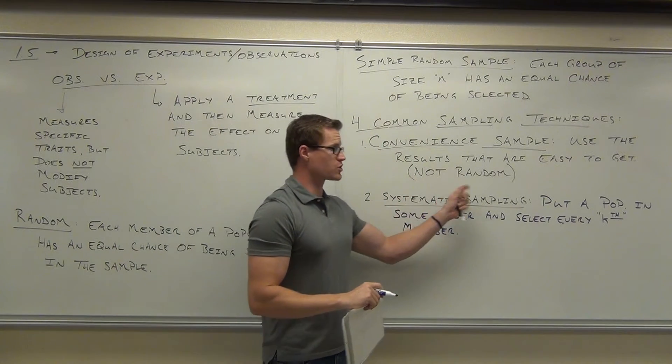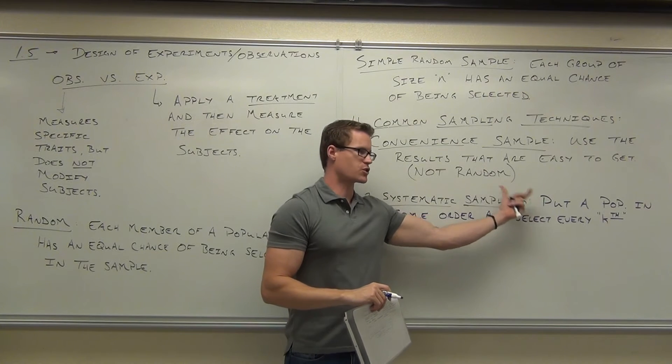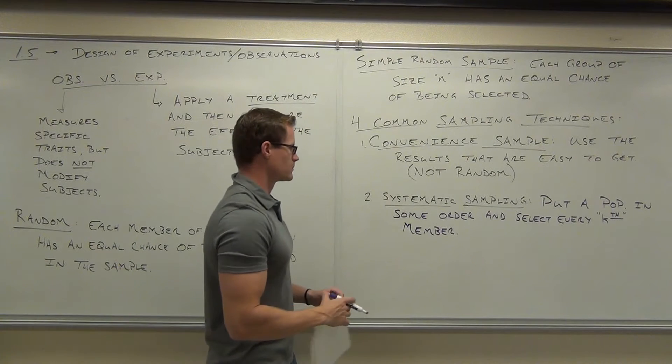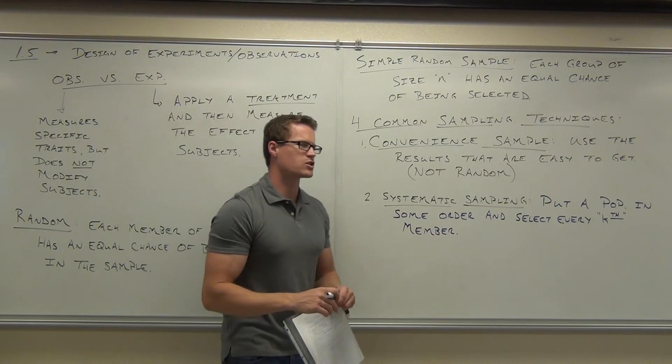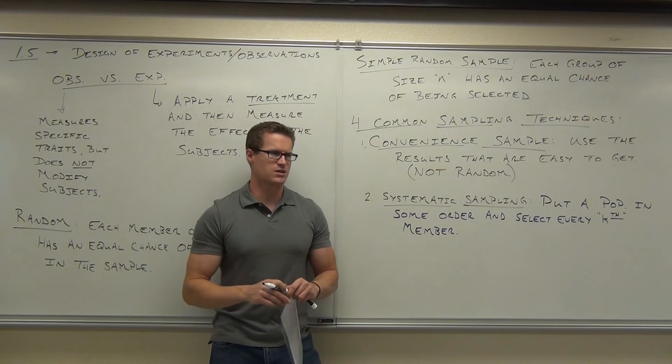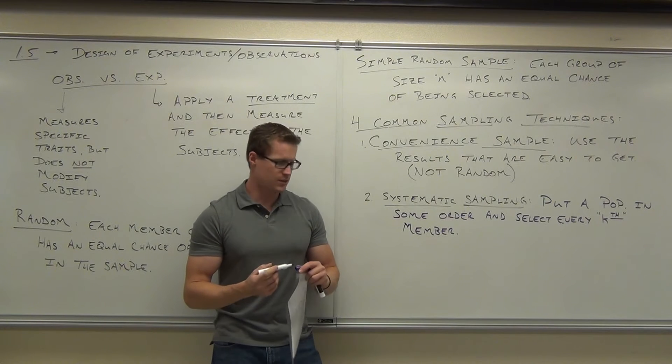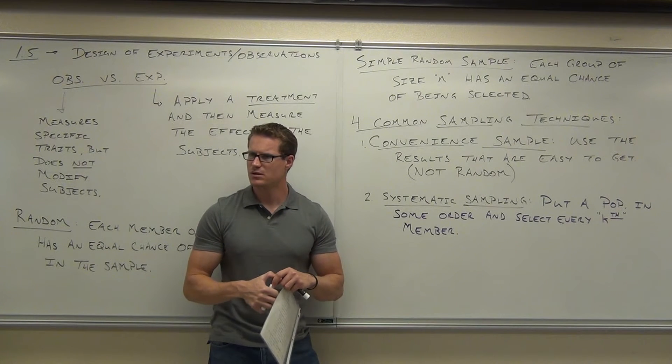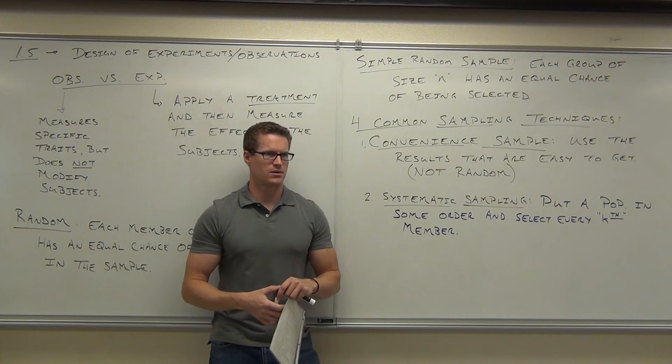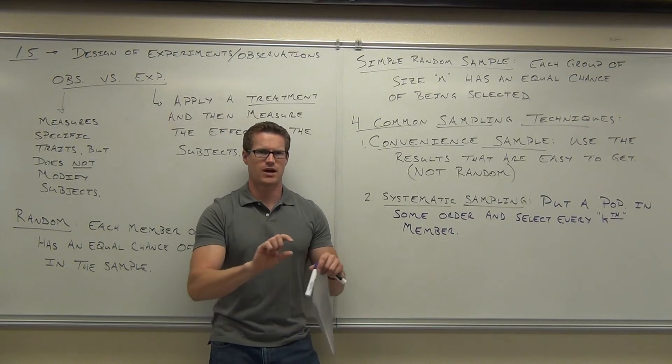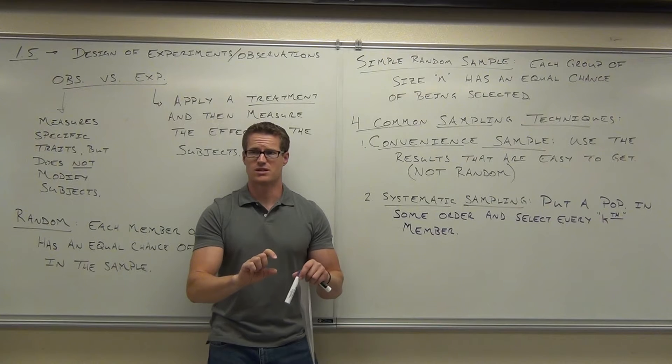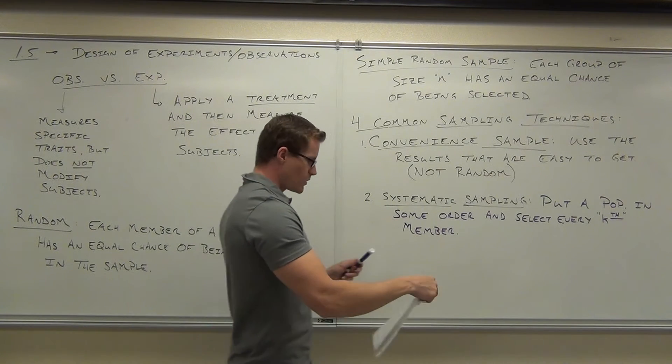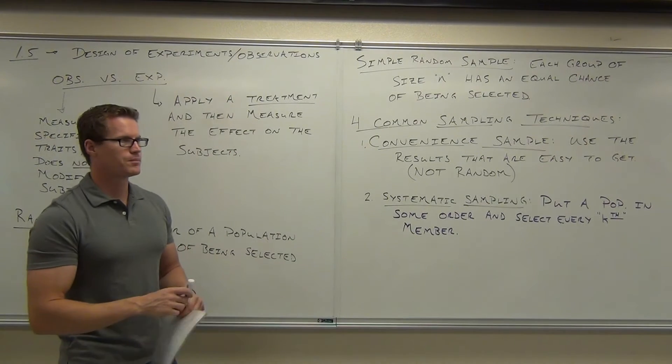So this one, you would start at a random spot, you start at a random spot on your list, and then you pick every kth member. Do you guys have any questions about these two, first off? The convenience sample, or the systematic sampling? Do you kind of get the systematic sampling? Do you get why it's random? How it's not really signifying any group at all? It's not really signifying any person? It's just completely random. Okay, the next one we have, it's a little bit more precise.